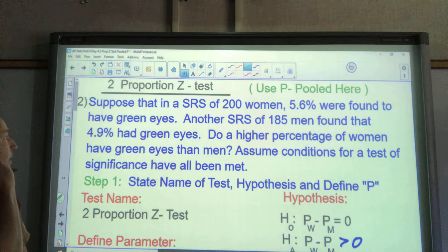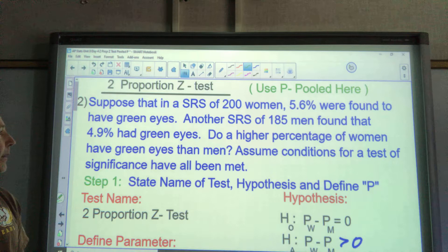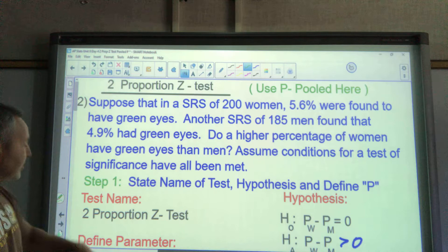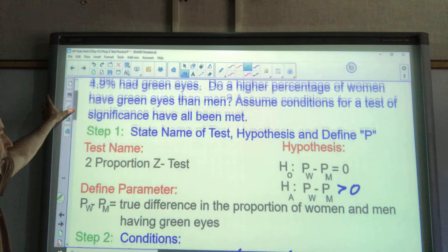Here's our problem. Suppose that in a simple random sample of 200 women, 5.6% were found to have green eyes. Another SRS of 185 men found that 4.9% had green eyes. Do a higher percentage of women have green eyes than men? Assume conditions for a test of significance have all been met. We're not going to do that because today I want to show you the conditions. So we'll ignore that.